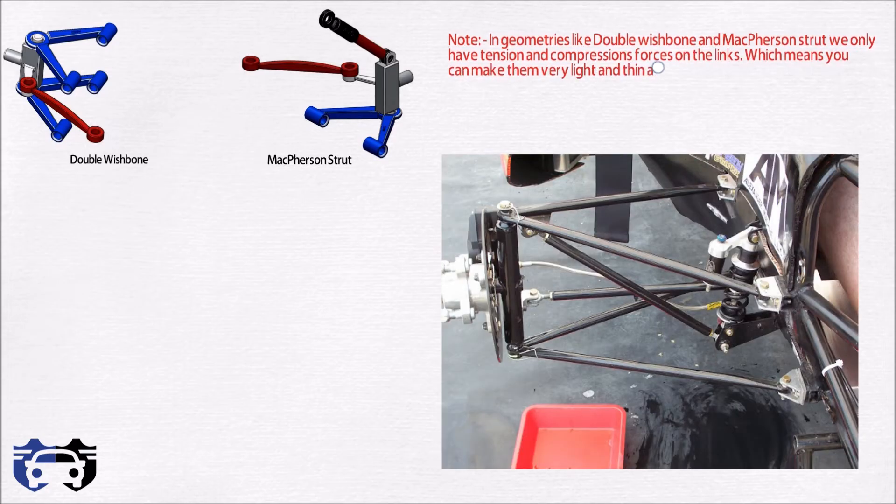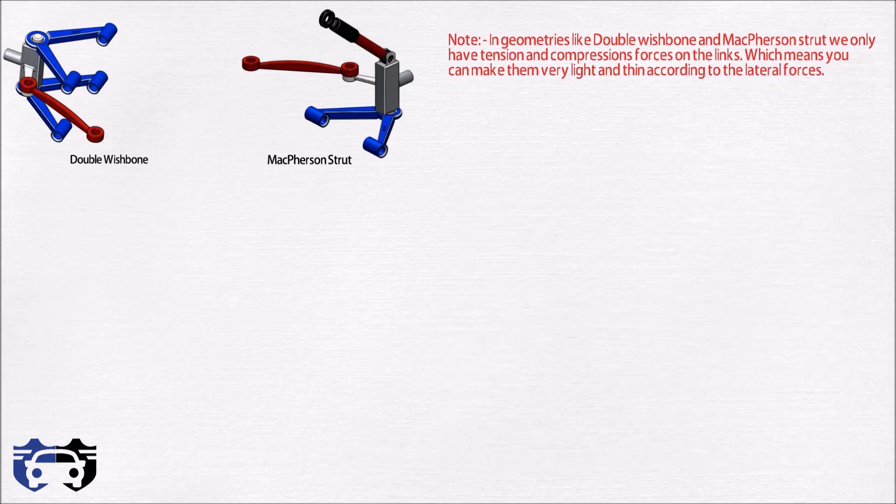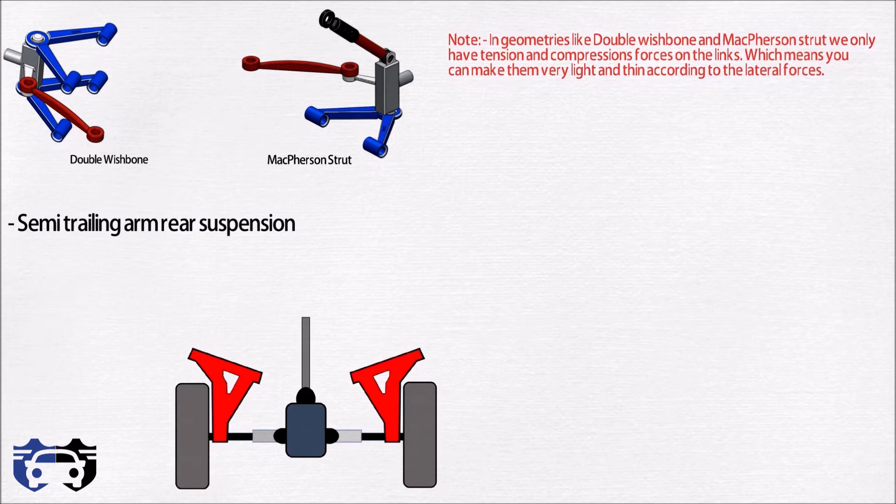Still there are some suspension geometries having less than five links. These suspensions generally include bending forces. For example, a semi-trailing arm rear suspension—you can see there is only one arm that does the job of five links, but in this case the link should be strong enough to sustain the bending and torsion forces of three directions of rotation.